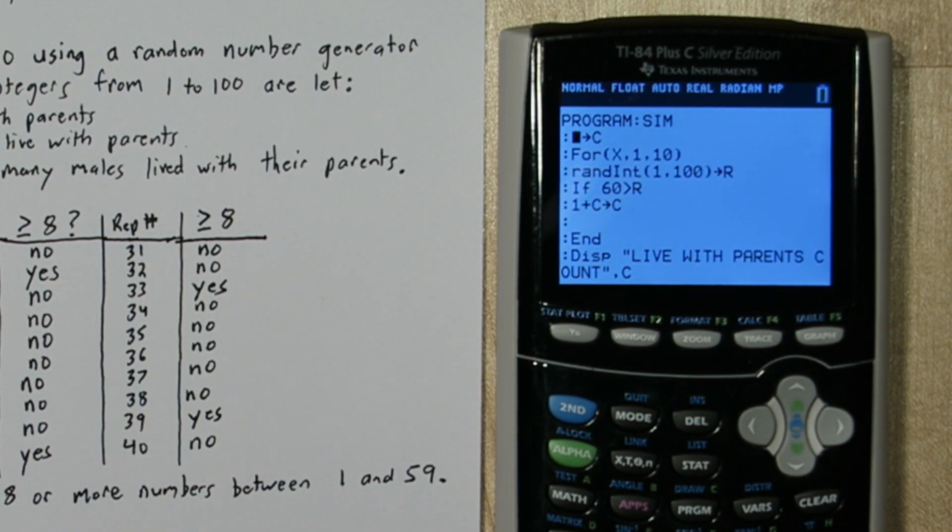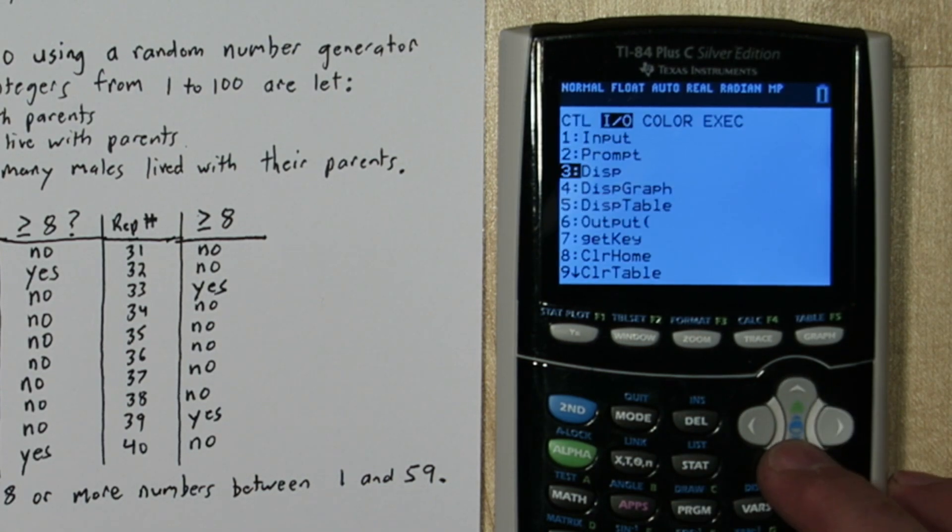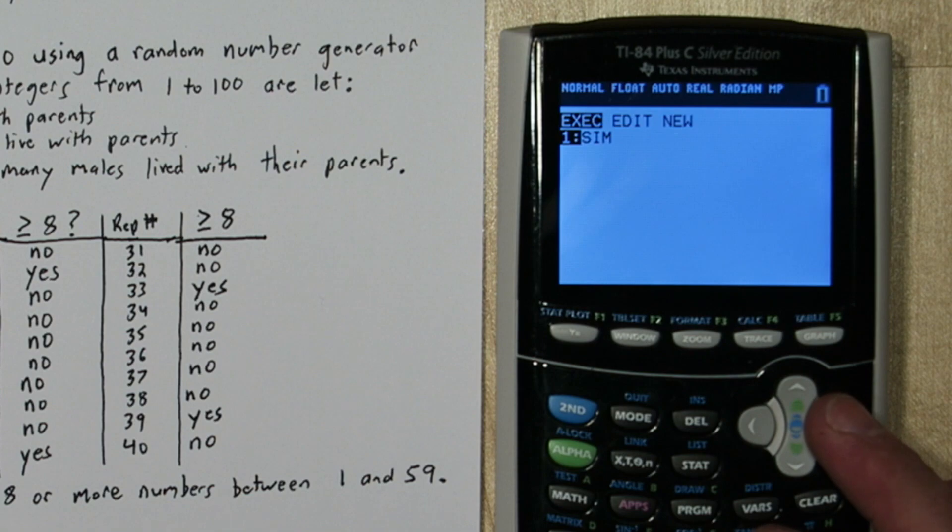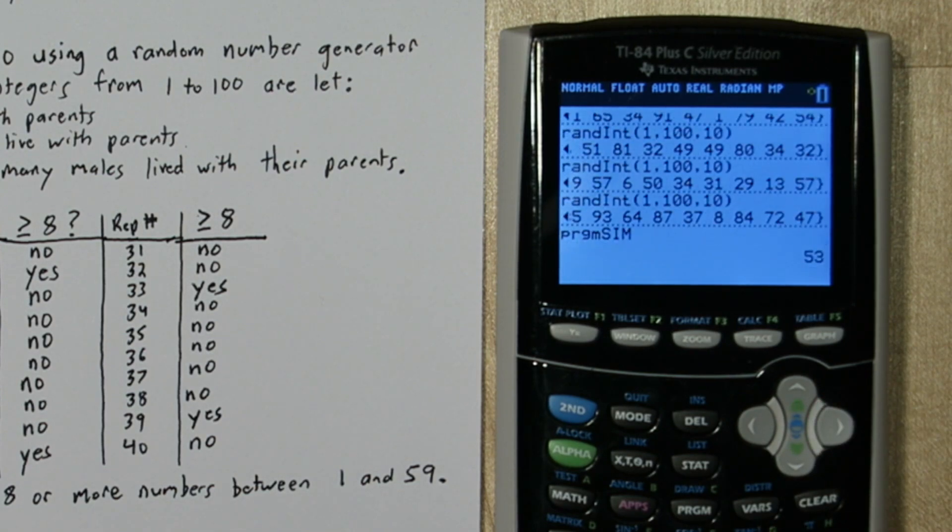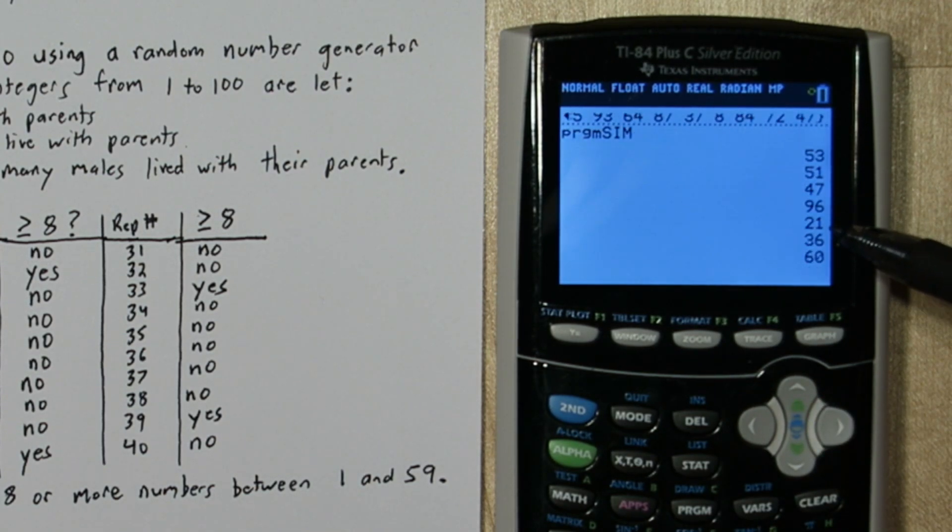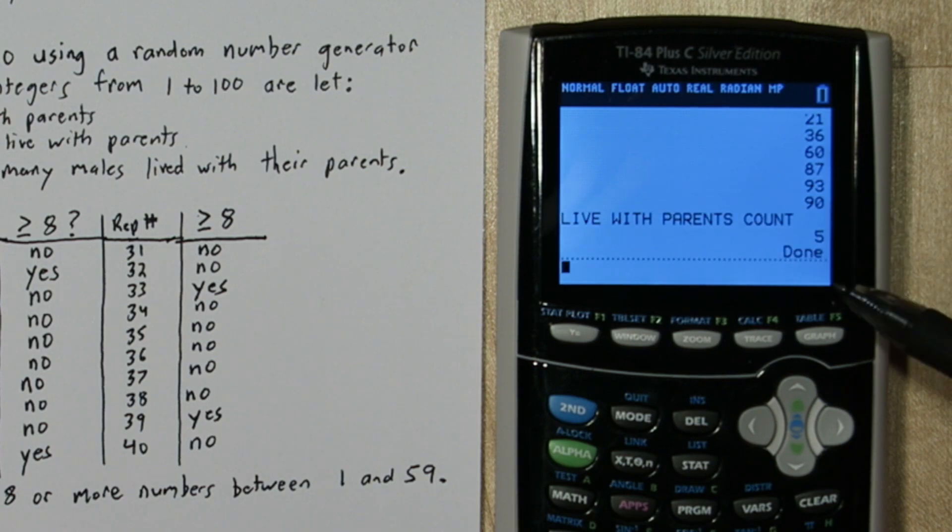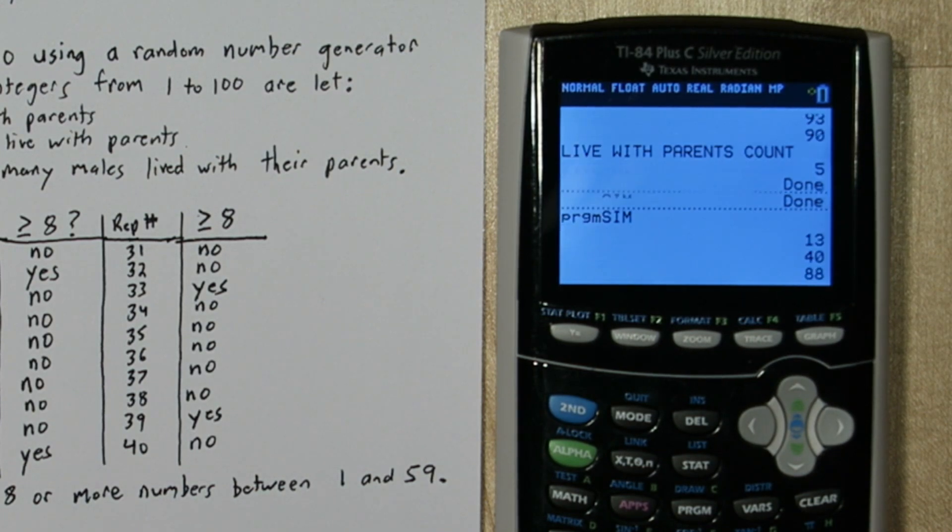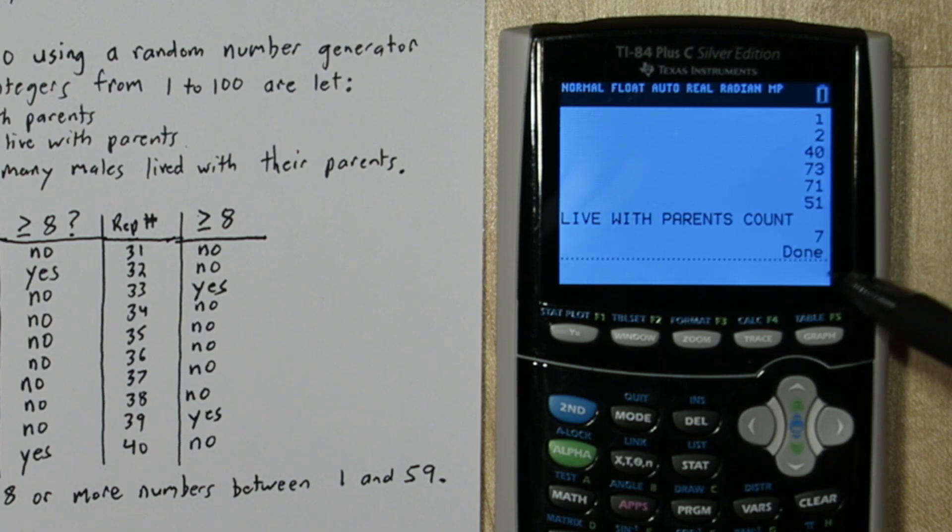Let me add an extra little command here. Right here I'm going to have it display the random number it's looking at. Alright I'm going to run the program. And here's the random numbers it's generating. And at the end it counts how many of those numbers were between 1 and 59. So in this case 5 of them. So it's just doing the same thing we did except it's automating the counting at the end. This time we had 7 numbers between 1 and 59.